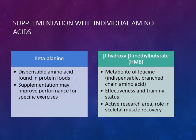Beta-alanine is a dispensable amino acid found in protein-containing foods, and supplementation with beta-alanine may improve performance for specific exercises. In the case of HMB, it is a metabolite of leucine — leucine is an amino acid we seem to need more of during exercise. Leucine is an essential indispensable amino acid and also a branched-chain amino acid.